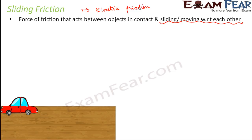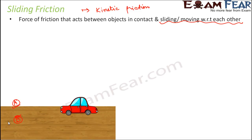Let us take an example of a toy car. You have a toy car and you move it on the floor. The two objects in contact are the toy car, object A, and the floor, object B. Initially the car is at rest, but when you apply some force to the car, the value of static friction also increases and reaches its limiting value, beyond which the car starts to move.